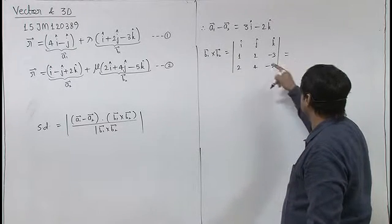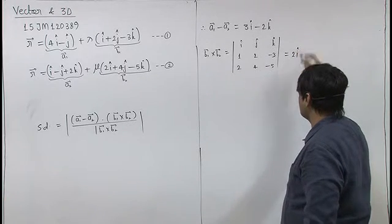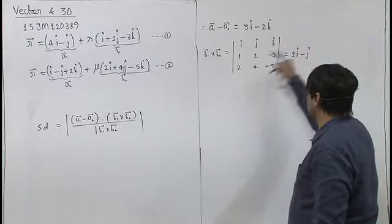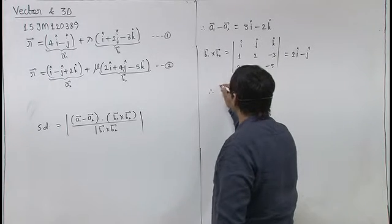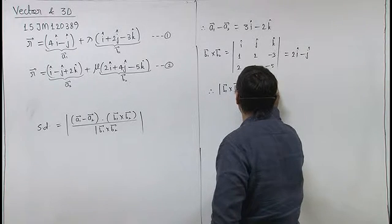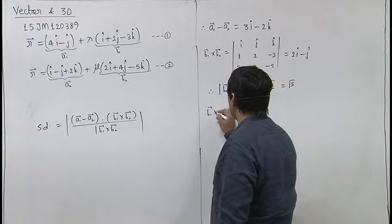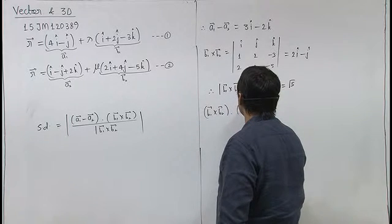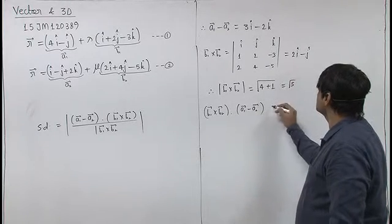That will be minus 10 plus 12, so 2i cap, and this is minus j cap, and this is 4 minus 4, so 0k cap. This is b1 cross b2. Magnitude of b1 cross b2 is under root 4 plus 1, that is root 5, and b1 cross b2 dot a1 minus a2, that will be equal to 6.